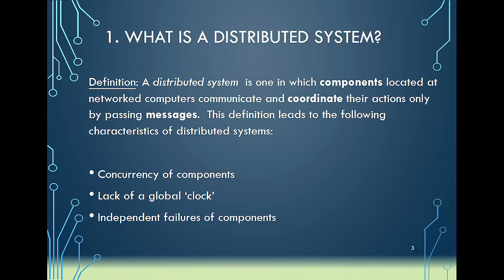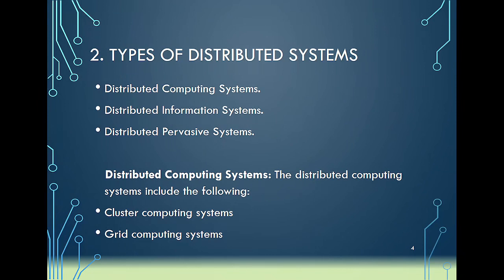The characteristics of distributed systems include the concurrency of components — the various components within a distributed system must always work concurrently. A downside is that they lack a global clock, so when sharing resources you can't say every distributed system must communicate at the same time. They also have fault tolerance mechanisms and independent failure of components, as well as transparency characteristics.